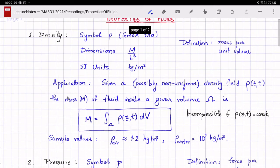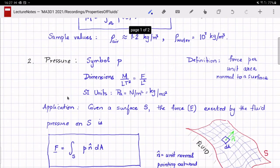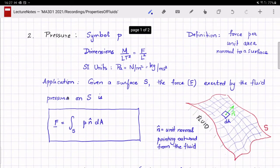The next property we will consider of a fluid is the fluid pressure denoted by small p. The fluid pressure is defined as the force exerted by a fluid normal to a surface per unit area of that surface. It has dimensions of force per length squared, which translates to M over LT squared.